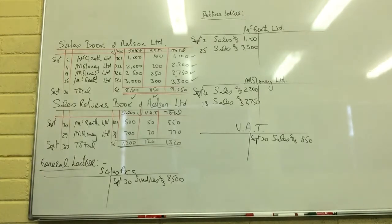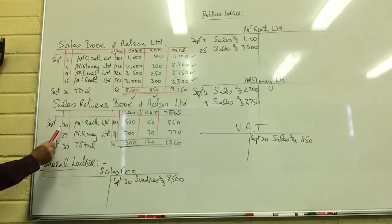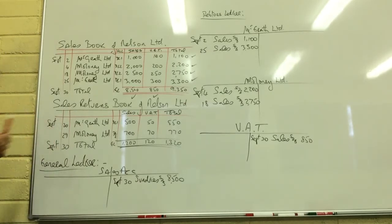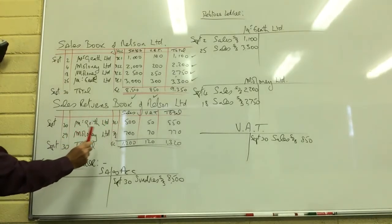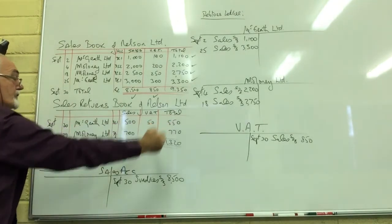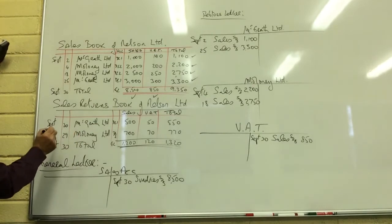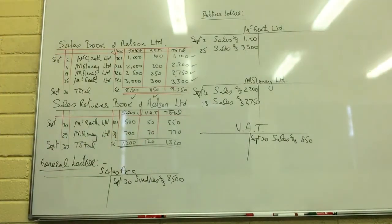Now we go on to the sales returns. Both McGrath and Maloney sent us back goods during the month. McGrath sent back goods on the 20th — we gave them a credit note instead of a refund, since they haven't paid us yet, so the credit note reduces the amount they owe us. McGrath sent back €500 worth of goods plus 10% VAT, making the credit note €550. We also gave Maloney a credit note dated September 29th for €700 plus 10% VAT, totalling €770.